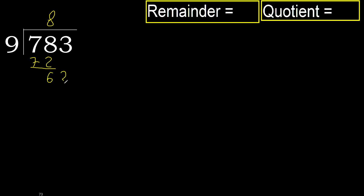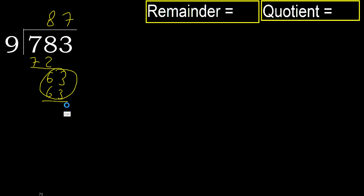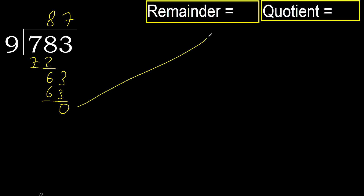Next: 63. 9 multiplied by 7 is 63, which is not greater. Subtract. Next, there is no remainder, therefore finish it.